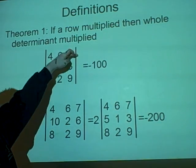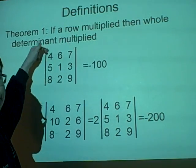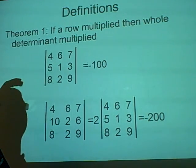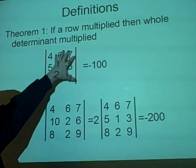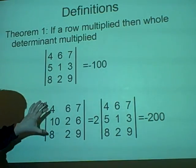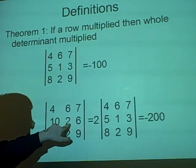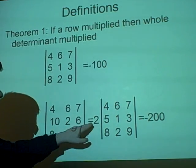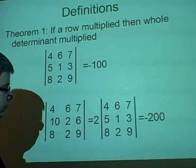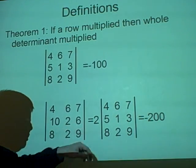If you remember, straight lines mean determinant. If a row is multiplied, then the whole determinant is multiplied. So we have our example here—the determinant is minus 100. If we compare this one with this one, we see that the second row is multiplied by two, so we have two times the determinant of this, which is minus 200. So if any of the rows is multiplied, the whole determinant is multiplied.